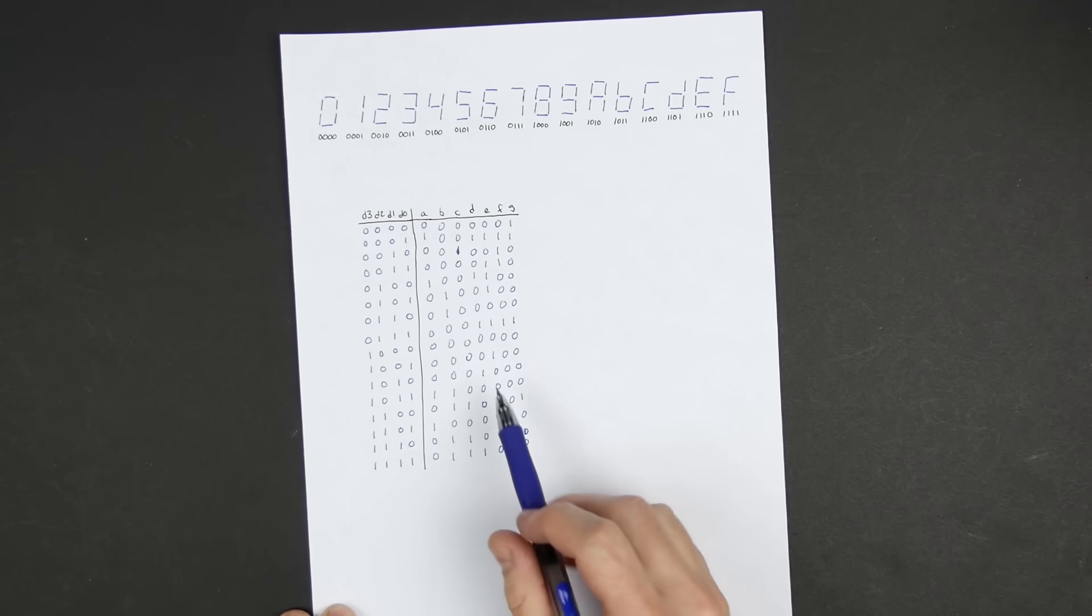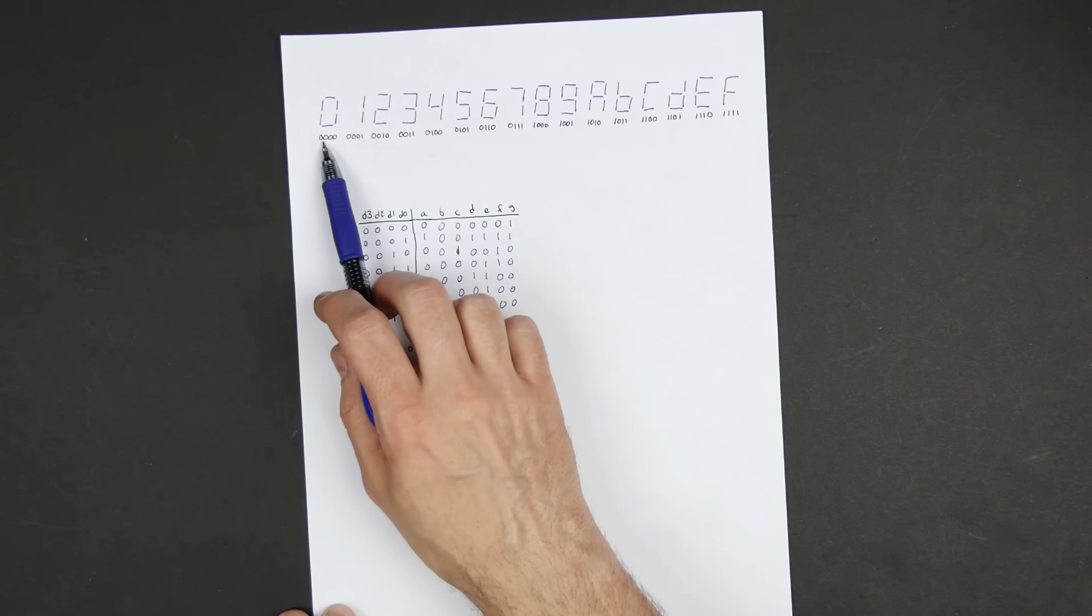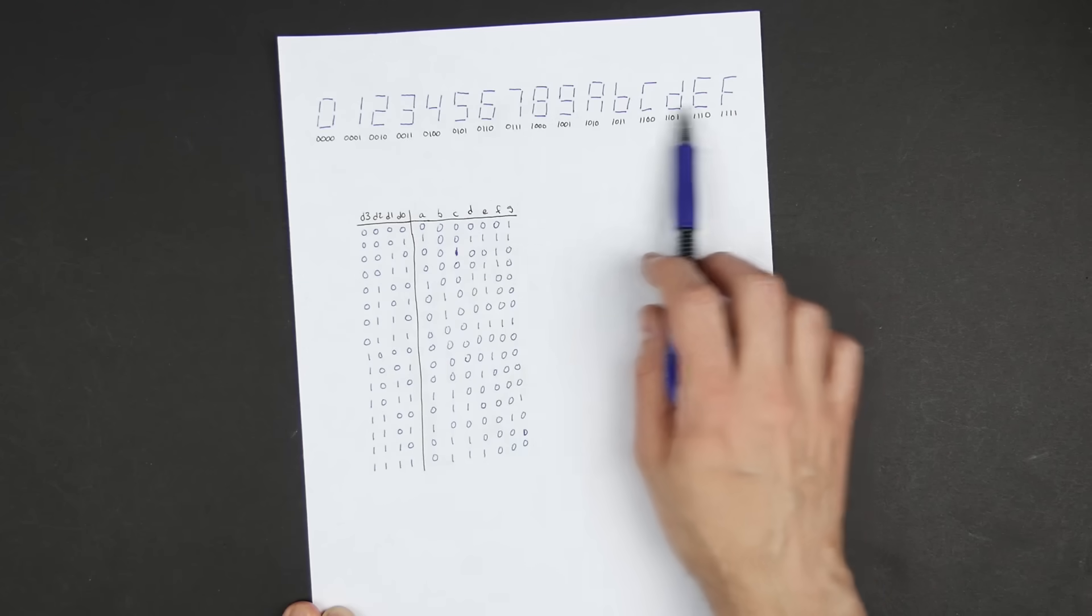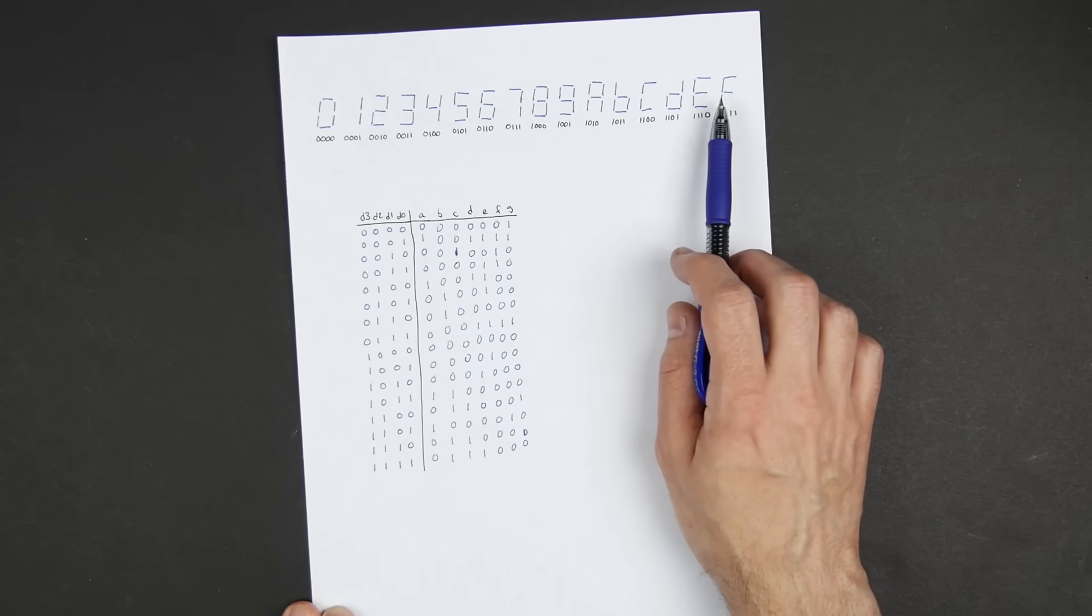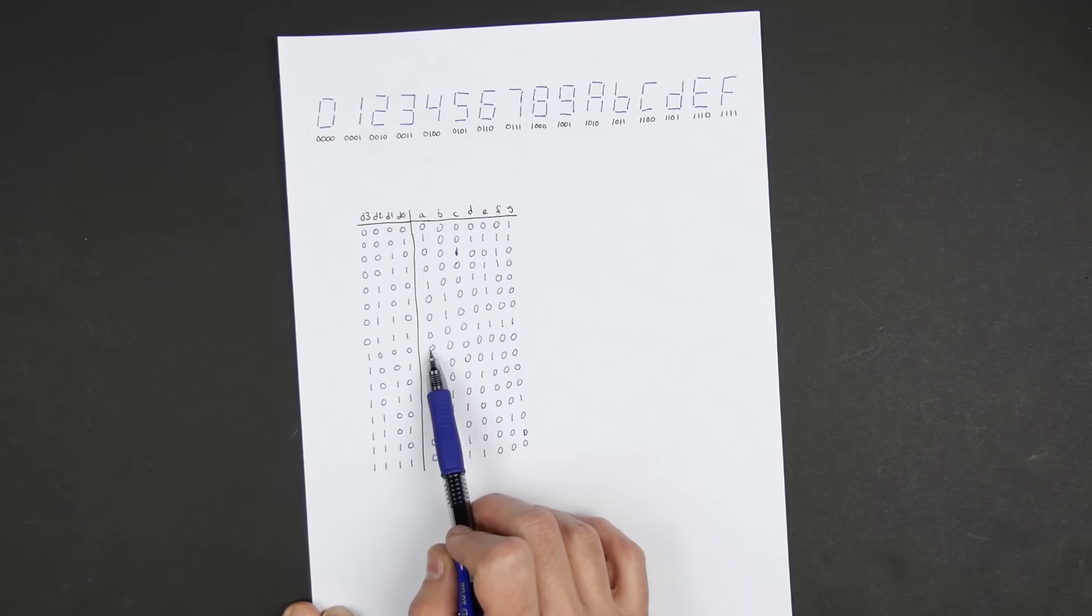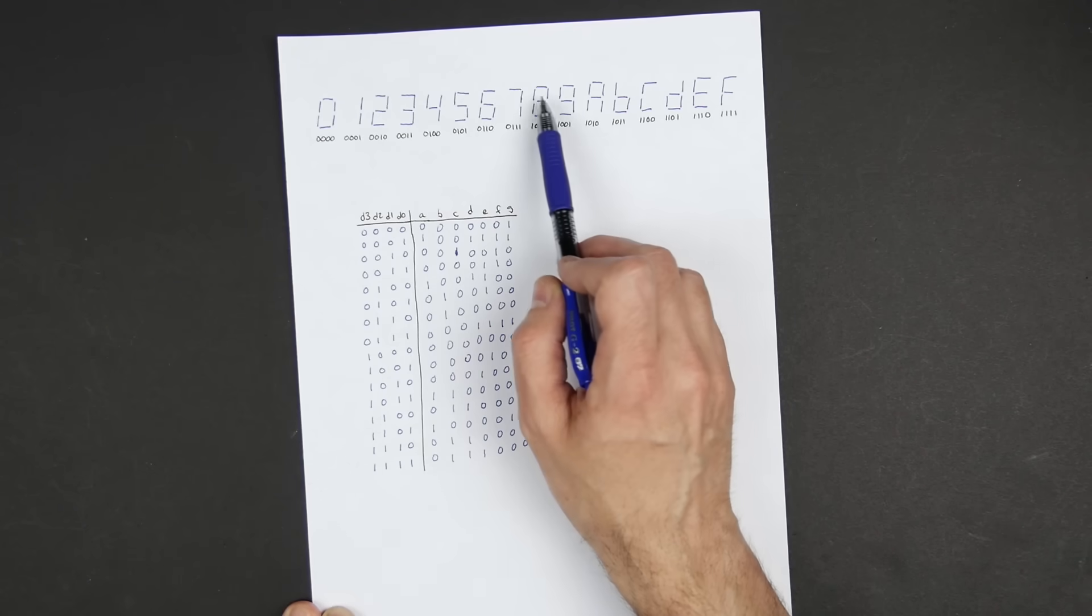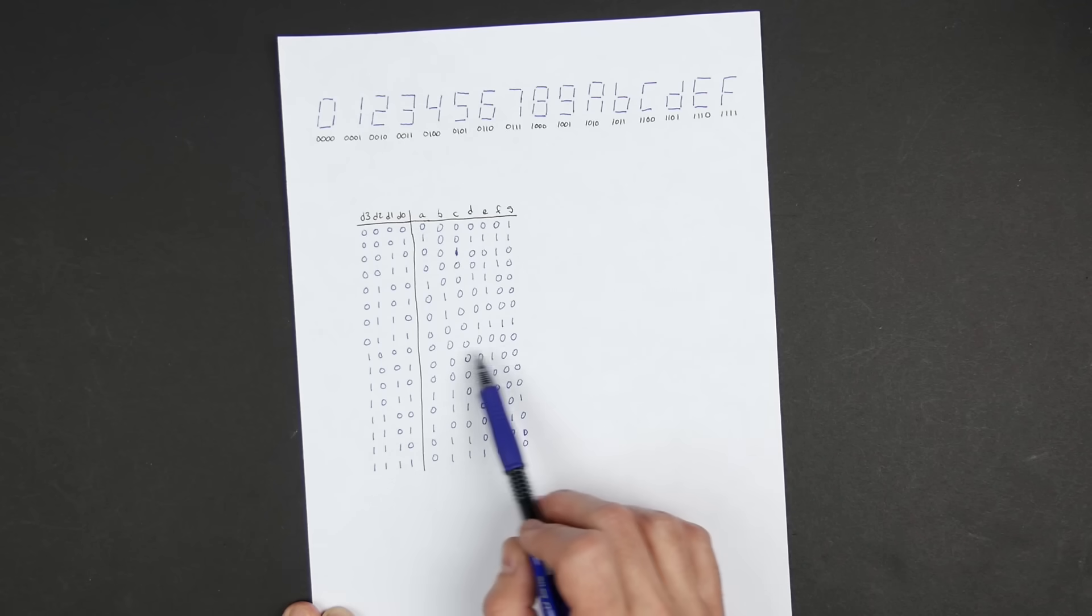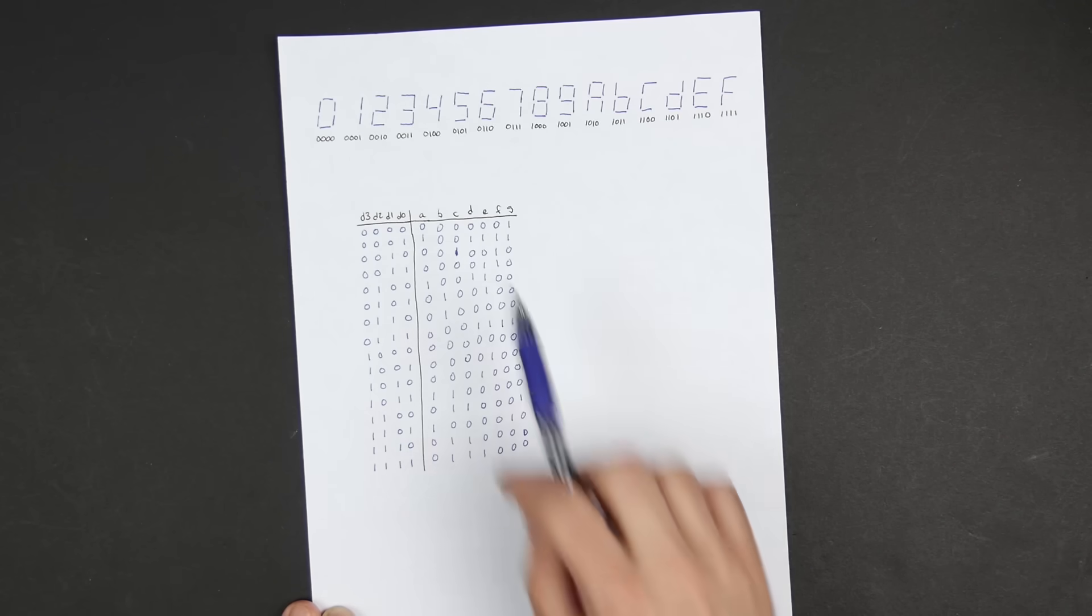And so if I haven't made any mistakes, this is the full truth table for a decoder that decodes four bits of binary to one of these hexadecimal digits. And I guess just spot checking a few things, it looks like eight, so one zero zero zero is eight, and all of those are zeros which makes sense because for eight all of the segments are on. But assuming I didn't make any mistakes here, this is the truth table that will get us a circuit that does this.